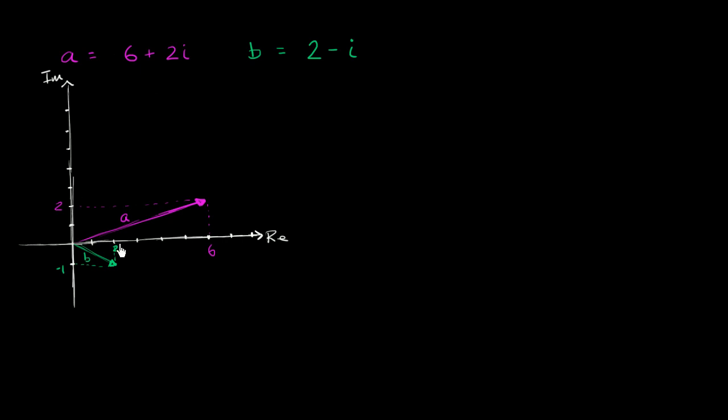So we've plotted two complex numbers right over here on this Argand Diagram. And what I want to think about is, what if we define a third complex number, C, as being equal to the complex number A minus the complex number B? What is C going to look like if we were to write it as just a sum of its real and imaginary parts? And what would it look like on this Argand Diagram?